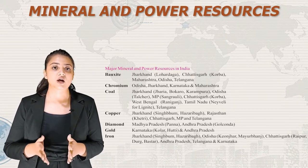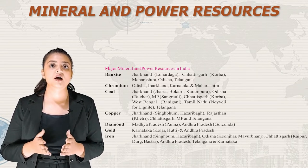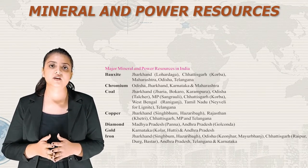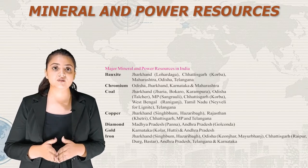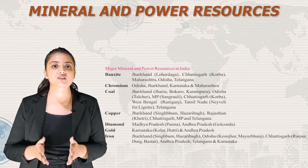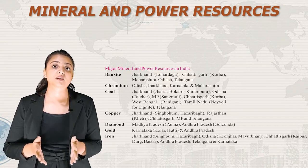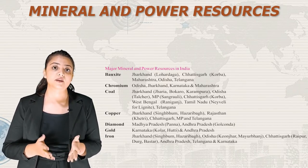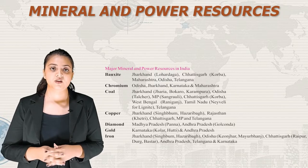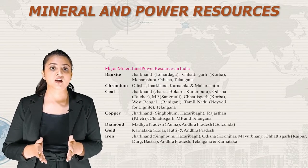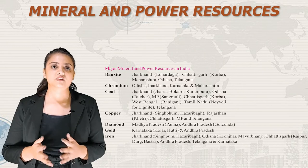Copper is found in Singhbhum and Hazaribagh regions of Jharkhand, the Khetri region of Rajasthan, and also in Chhattisgarh, Madhya Pradesh and Telangana. Diamonds in India are found in Madhya Pradesh (Panna region) and Andhra Pradesh (Golconda region). Gold is found in Karnataka — in the Kolar and Hutti regions — and in Andhra Pradesh.